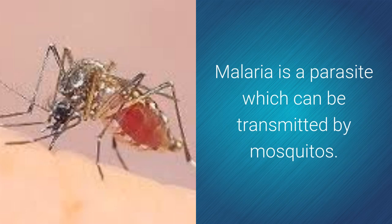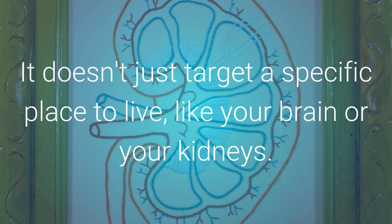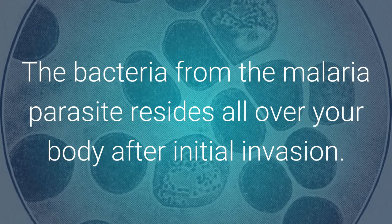For example, malaria is a parasite which can be transmitted by mosquitoes. When it is transmitted to humans it can spread throughout the body quite quickly, making this its home. It doesn't just target a specific place to live like your brain or kidneys. The bacteria from the malaria parasite resides all over your body after initial invasion.